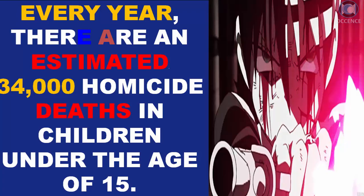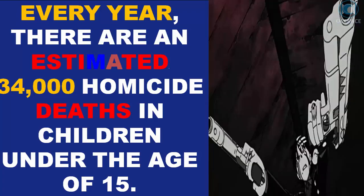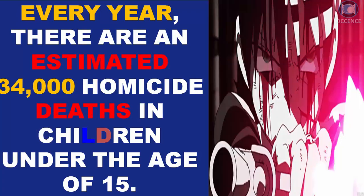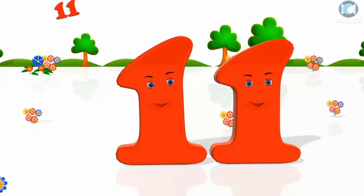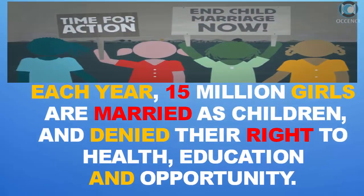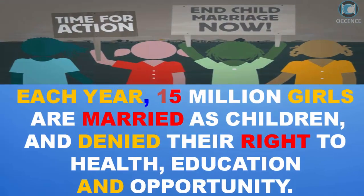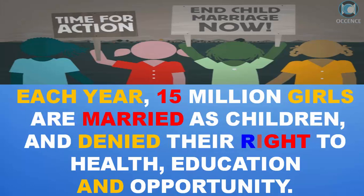Every year, there are an estimated 34,000 homicide deaths in children under the age of 15. Each year, 15 million girls are married as children, and denied their right to health, education and opportunity.